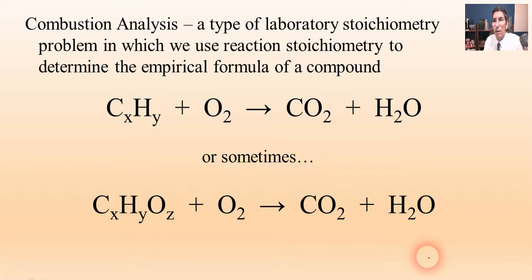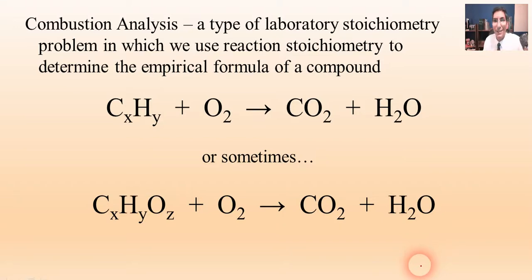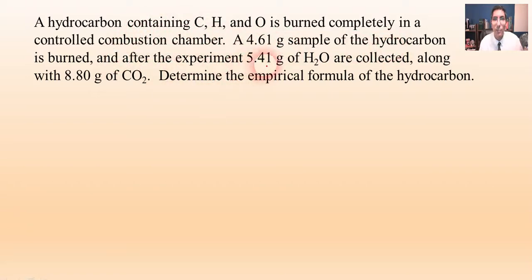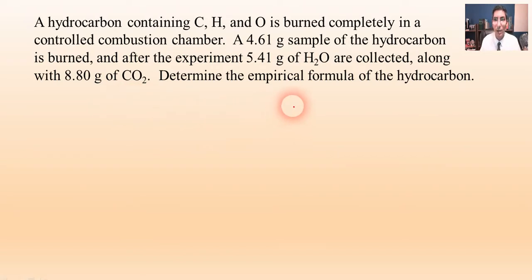Let's see how these combustion analysis problems work. They're very involved and kind of long, but if you have a good foundation in stoichiometry, you won't have much problem. Let's try this problem: we have a hydrocarbon containing carbon, hydrogen, and oxygen that is burned completely in a controlled combustion chamber. A 4.1 gram sample is burned, and after the experiment, 5.41 grams of water are collected along with 8.80 grams of carbon dioxide.